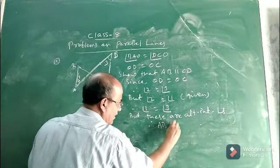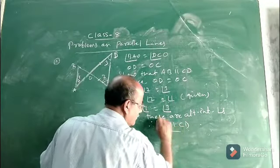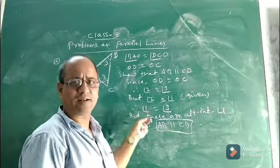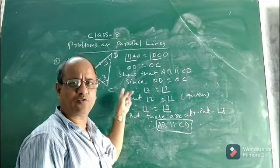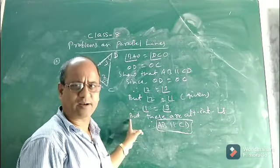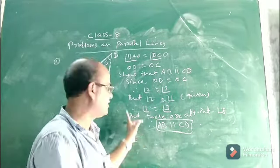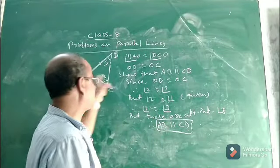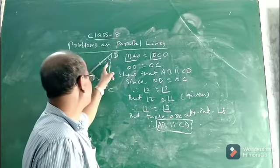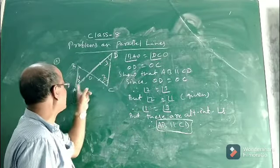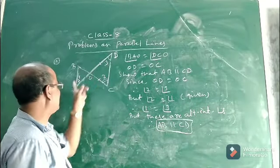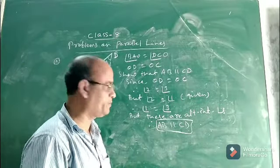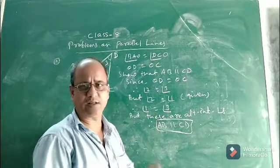So as a pair of alternate interior angles is equal, AB and CD must be parallel — therefore AB is parallel to CD. We know that when a transversal intersects two parallel lines, each pair of alternate interior angles is equal. So the converse is: if one pair of alternate interior angles is equal, then the two lines are parallel. Since angle one and angle three are equal, AB is parallel to CD.